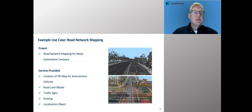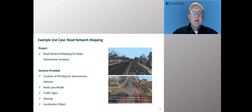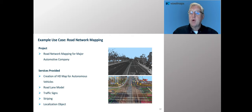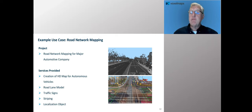For road network mapping, we did a data collection for a major automotive company looking for an HD map — a high definition map for autonomous vehicles. We went and collected a vast number of miles of roads, extracted full roadway models, traffic signs, striping, localization objects, and a wide variety of capabilities.